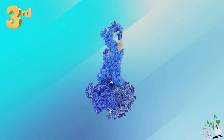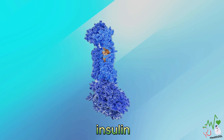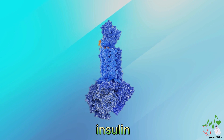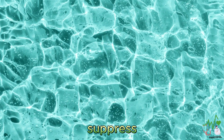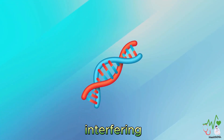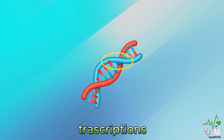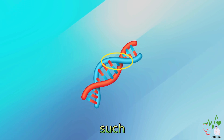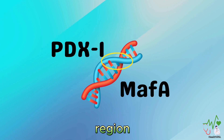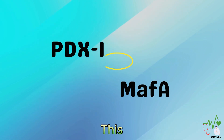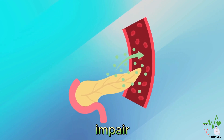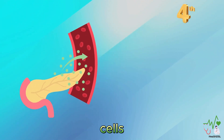Third, ceramides can also affect the expression of the insulin gene, which encodes the precursor of insulin. Ceramides can suppress the transcription of the insulin gene by interfering with the binding of transcription factors such as PDX1 and MAFA to the promoter region of the gene. This can decrease the synthesis of insulin and impair its secretion from beta cells.